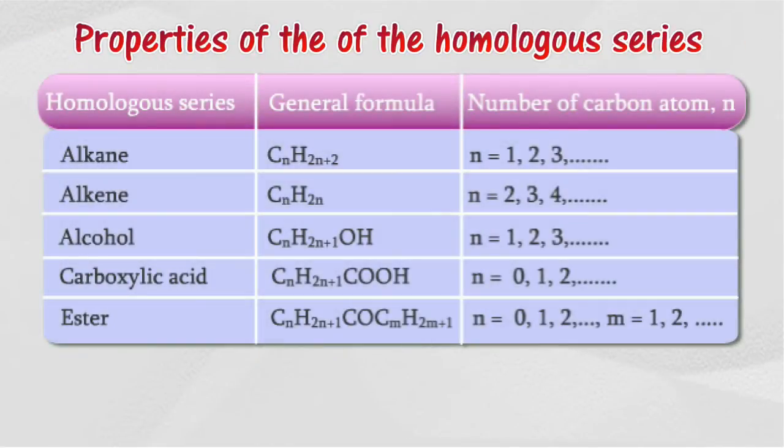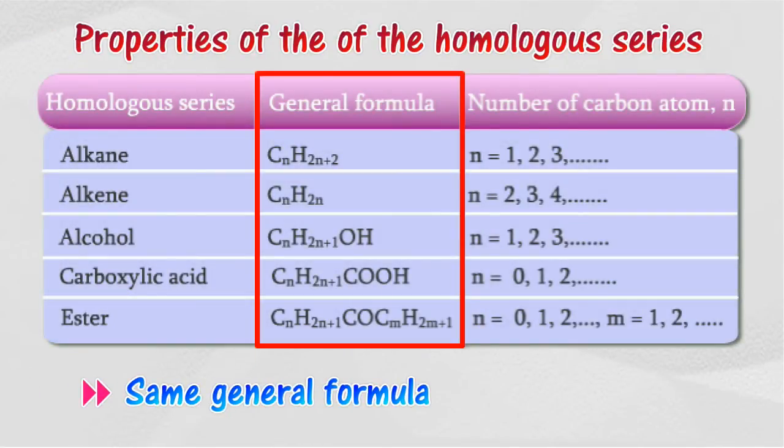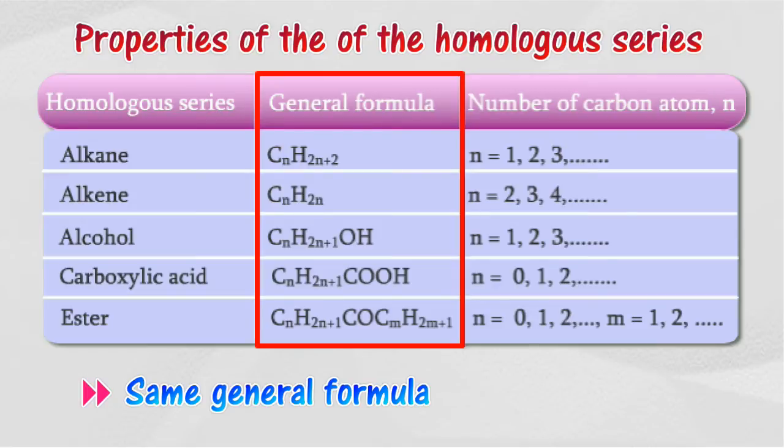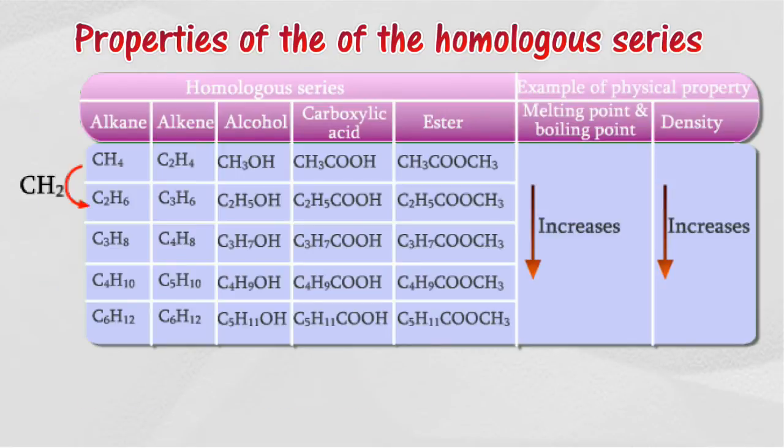Properties of the homologous series: Each member can be represented by a general formula. Each member differs from the following member by one CH2 group.